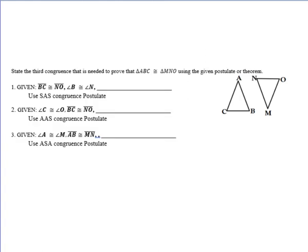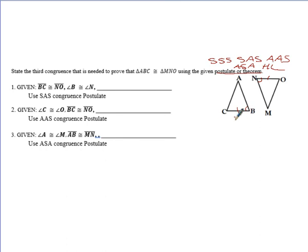Here are a couple of practice problems you'll see on tests and quizzes. State the third congruence needed to prove the two triangles are congruent. For triangle ABC congruent to MNO: given that BC is congruent to NO and angle B is congruent to angle N, and I want to use side-angle-side — I need the sides adjacent to angle B and angle N. So I would say AB is congruent to NM.